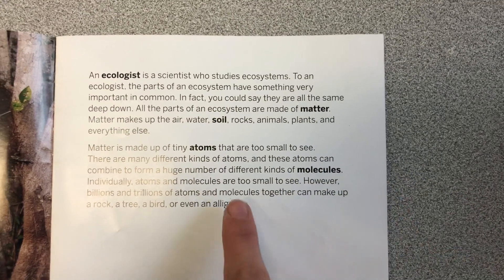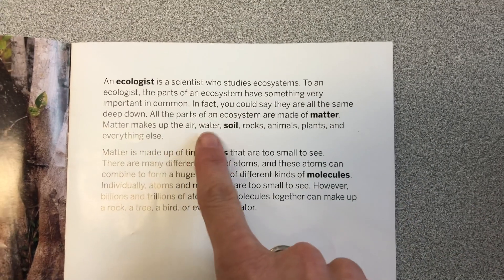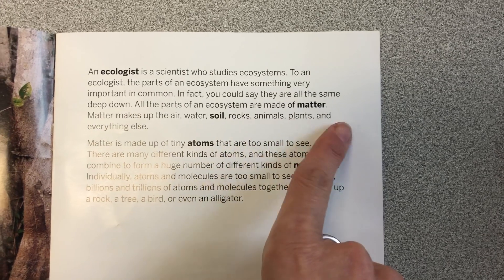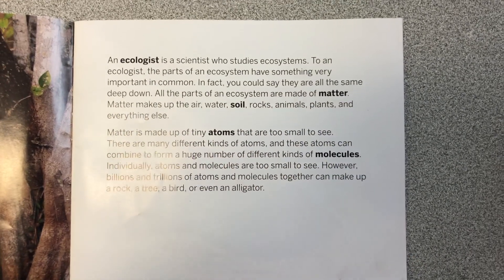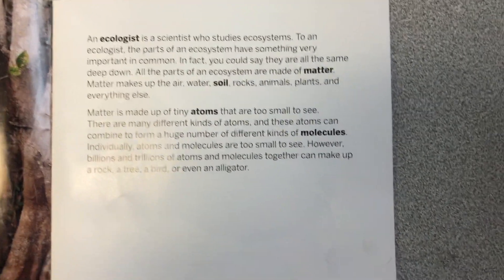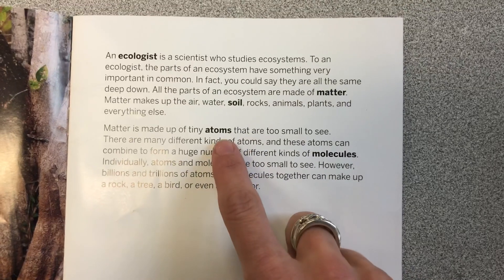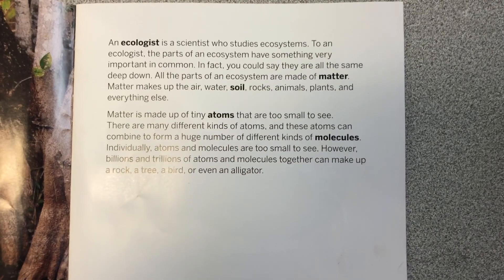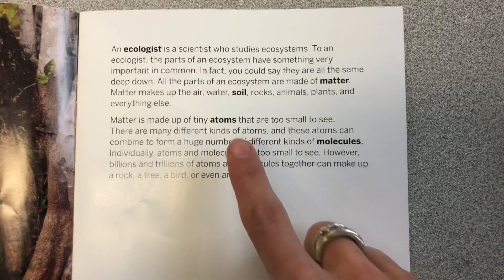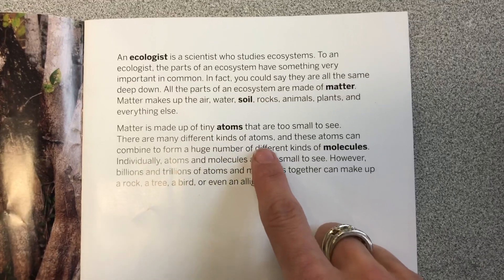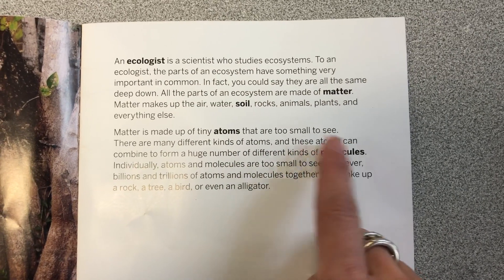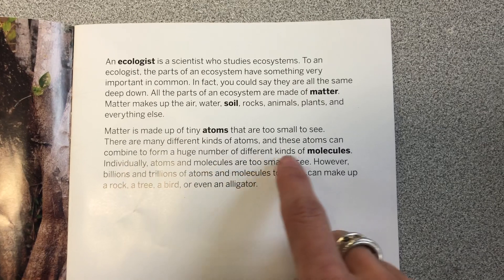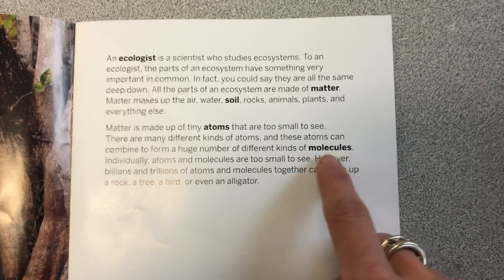Matter makes up the air, water, soil, rocks, animals, plants, and everything else. Matter is made up of tiny atoms that are too small to see. There are many different kinds of atoms, and these atoms can combine to form a huge number of different kinds of molecules.